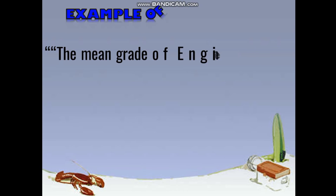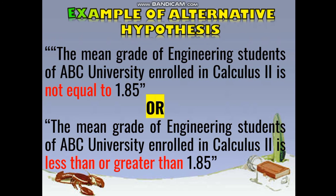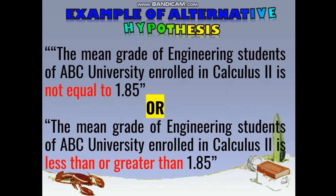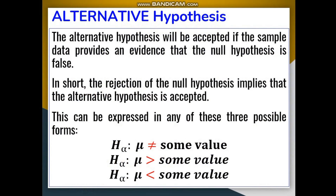For example, the null hypothesis earlier was: the mean grade of engineering students of ABC University enrolled in Calculus 2 is equal to 1.85. For the alternative hypothesis, since the null uses 'equal to,' we take the opposite — so the alternative becomes 'not equal to 1.85,' which can also be written as 'less than or greater than 1.85.' The symbols for alternative hypothesis are: not equal to some value, greater than some value, or less than some value — based on your given data.